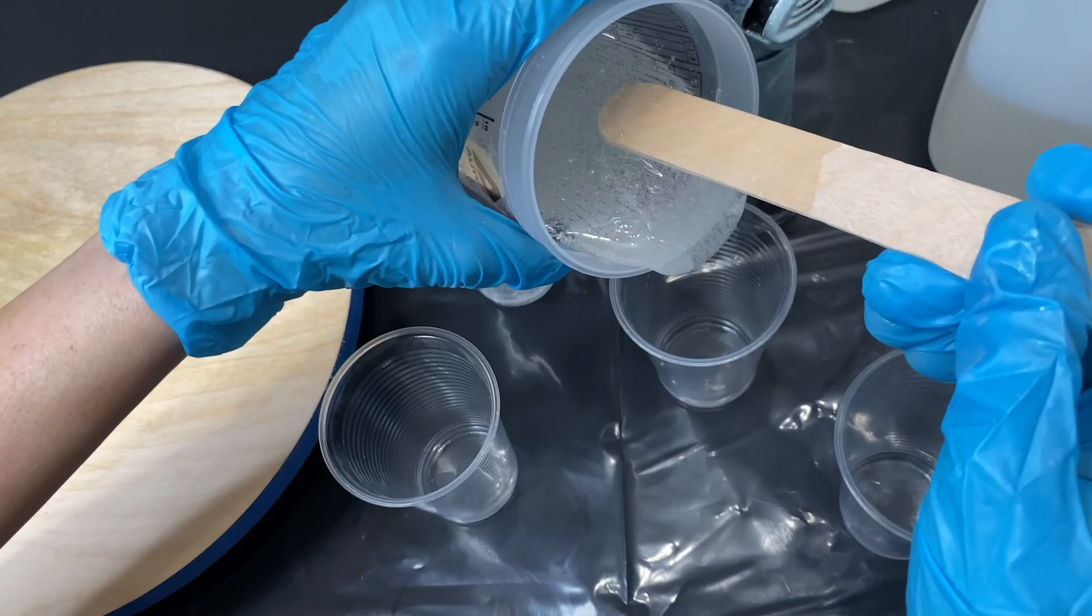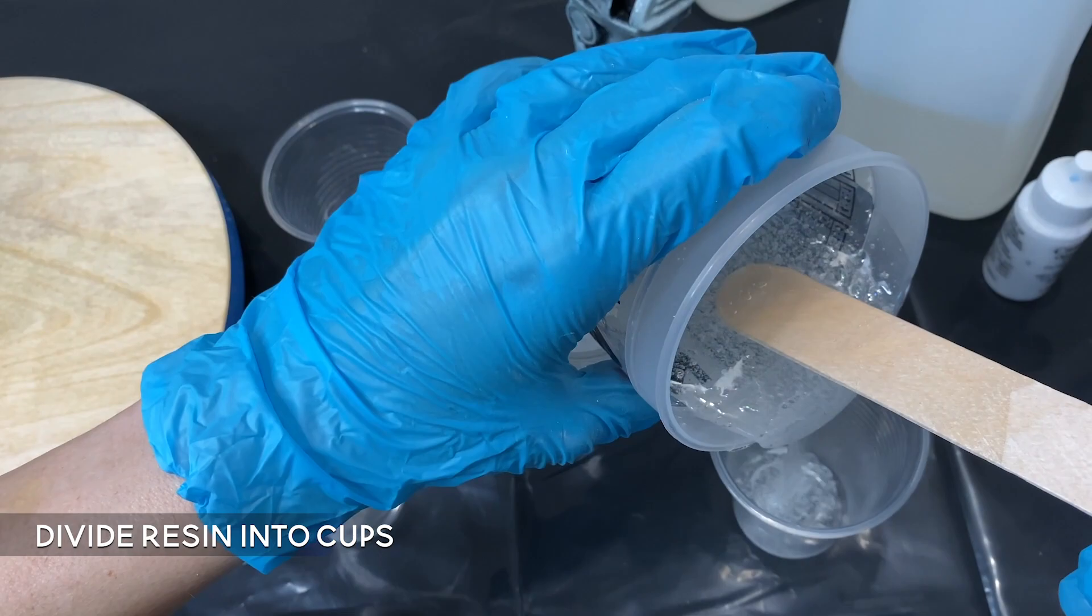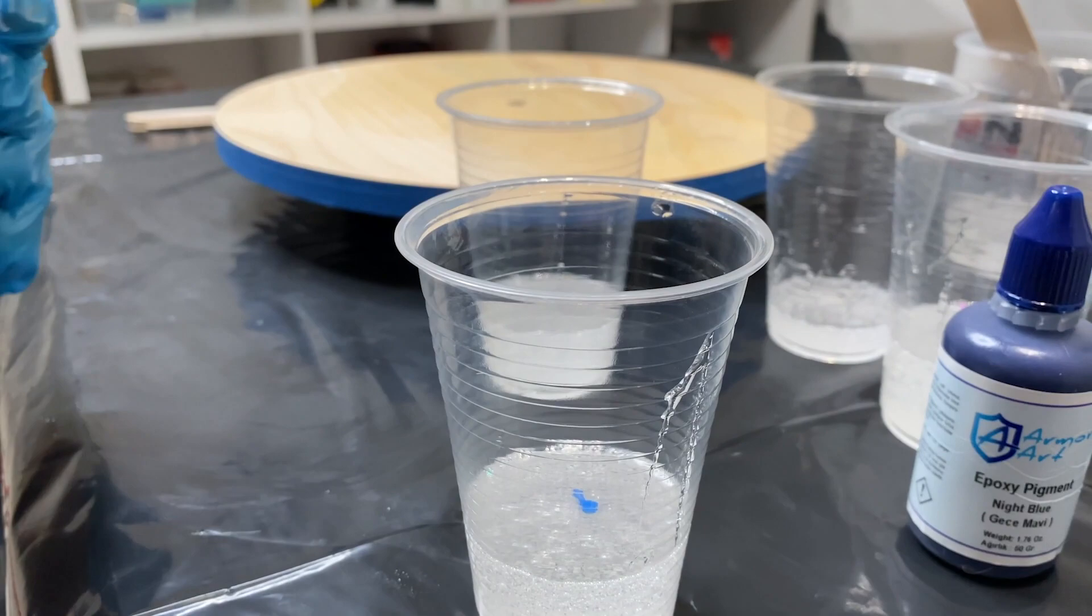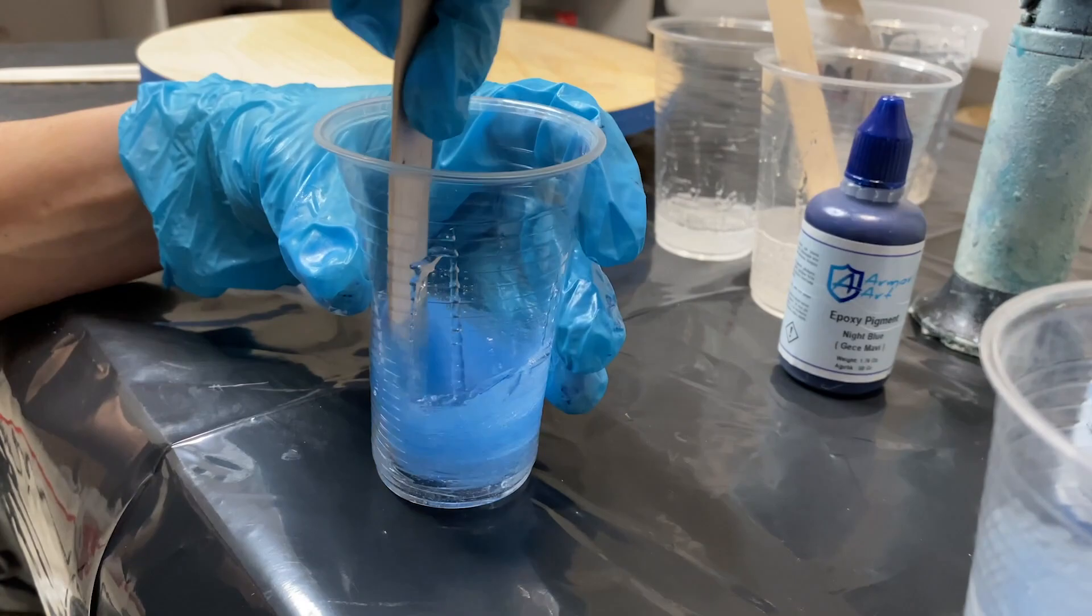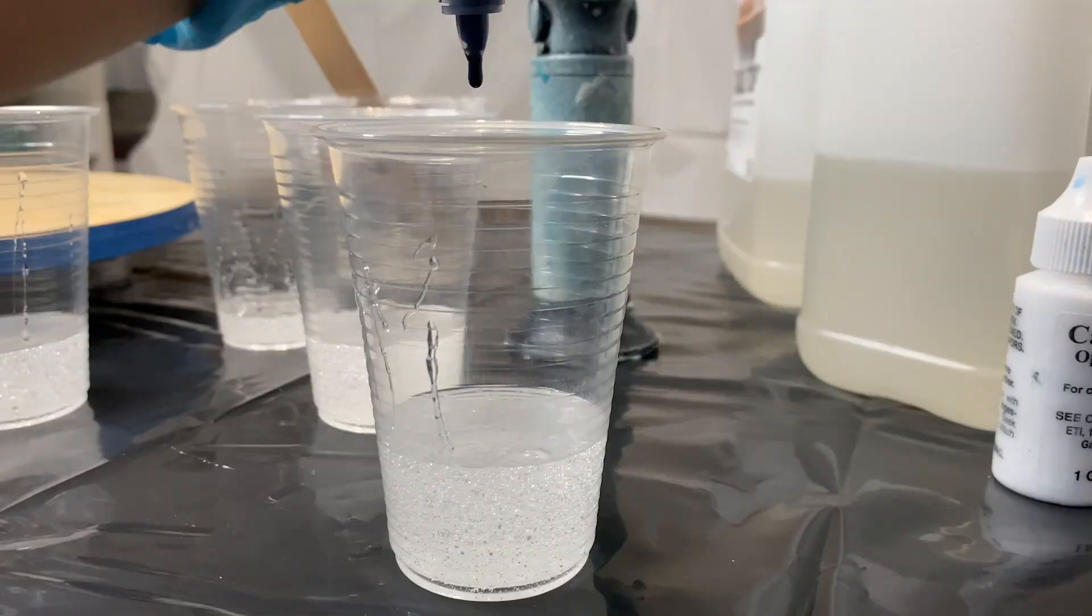This will ensure a good cure. Please remember that as you mix your epoxy together to scrape the sides of your cup. Usually there's one part of the epoxy that sticks to the sides and bottom of the cup, and it's really important to get that epoxy off the sides and mixed into the rest of the resin.